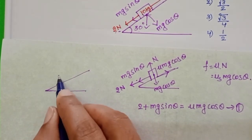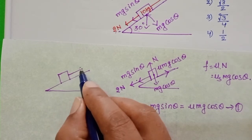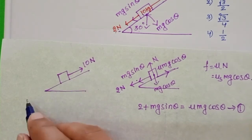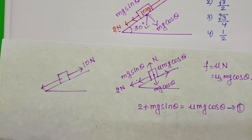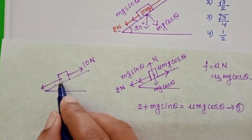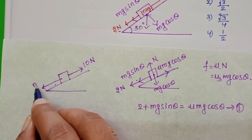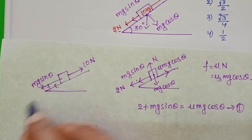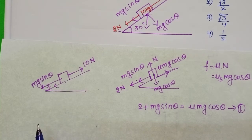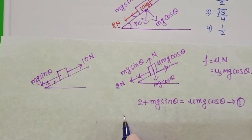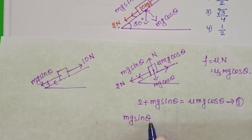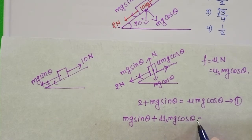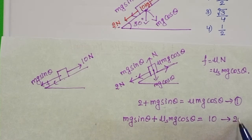Next, 10 newtons of force is applied on the block in the upward direction, and the block is again at equilibrium. When force is applied in the upward direction, the frictional force acts in the downward direction. So along the inclined plane downward: mg sinθ plus frictional force μs mg cosθ equals 10. This is Equation 2.